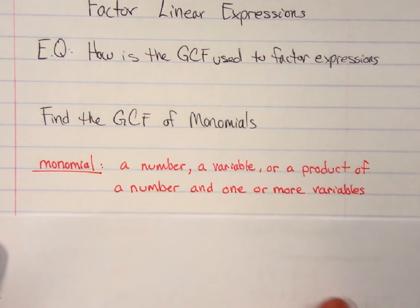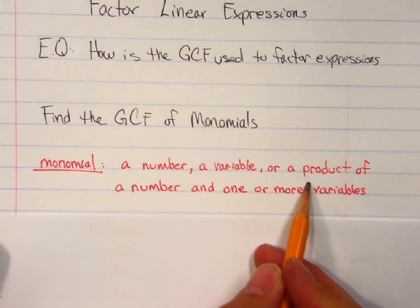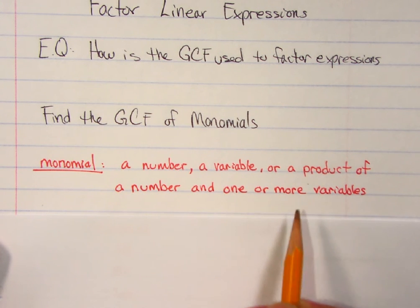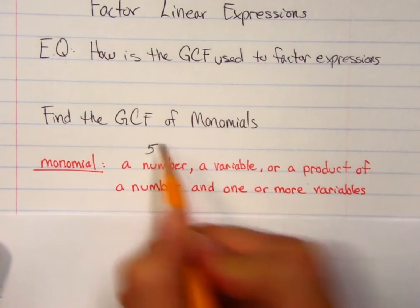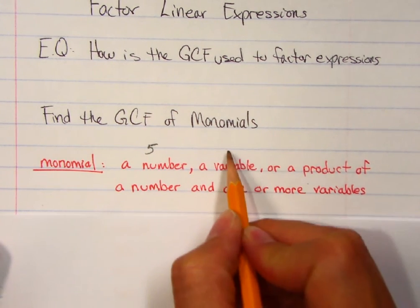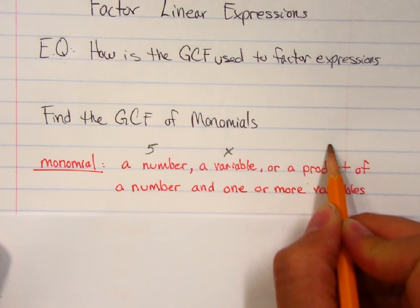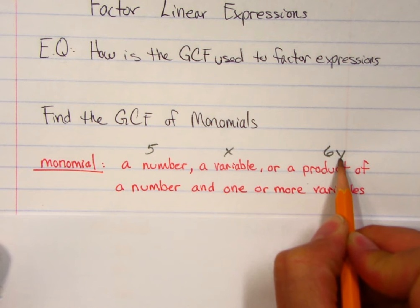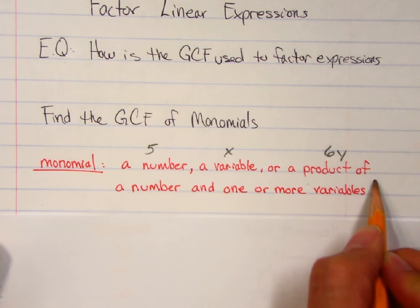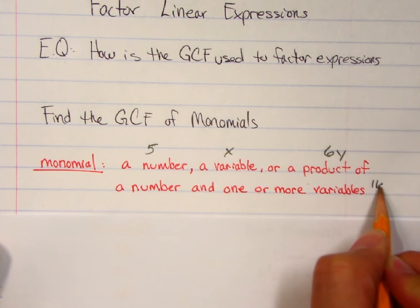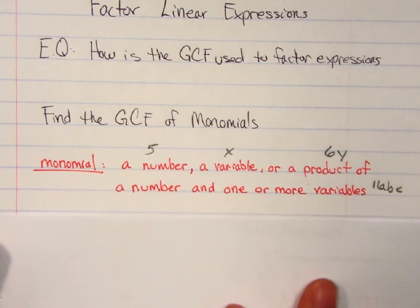So what is a monomial? Well, a monomial is a number, a variable, or a product of a number and one or more variables. So it could be just a number by itself, let's say 5. It could be a variable, let's say x. Or it could be a product of a number, let's say 6y, product of a number and one or more variables. Or maybe we have something like 11abc, it's a product of the variables. So those are all called monomials.